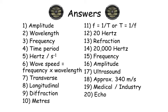Number three: frequency. Number four: time period. Number five: hertz or per second.